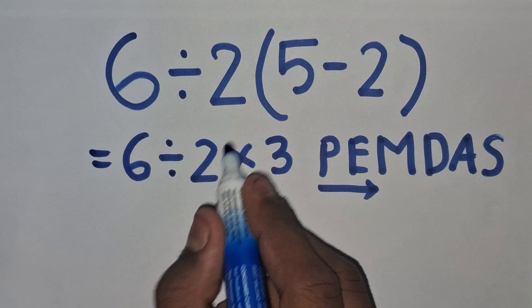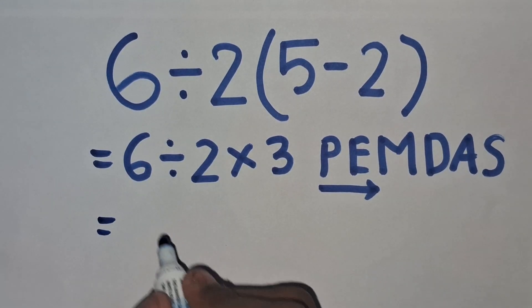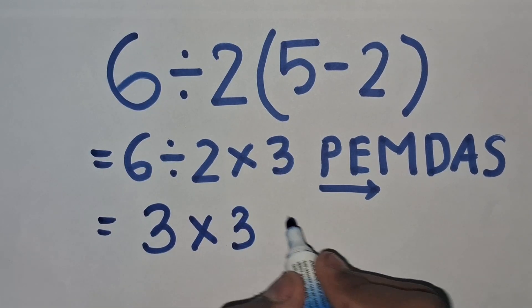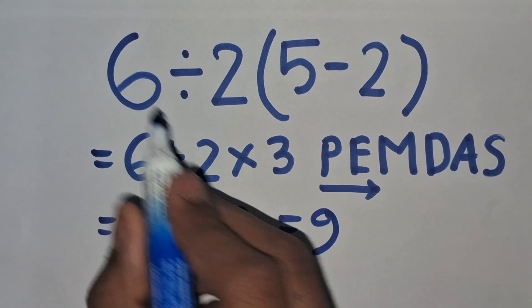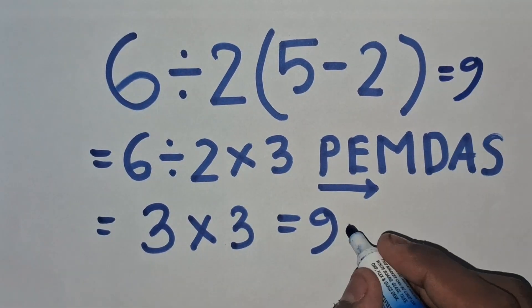So first this division, then this multiplication. 6 divided by 2 equals 3, which is multiplied by 3, and finally 3 times 3 equals 9. So 6 divided by 2 times 5 minus 2 equals 9.